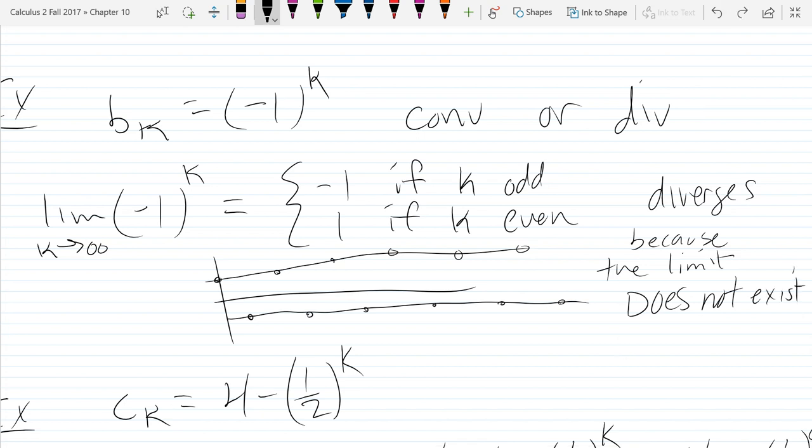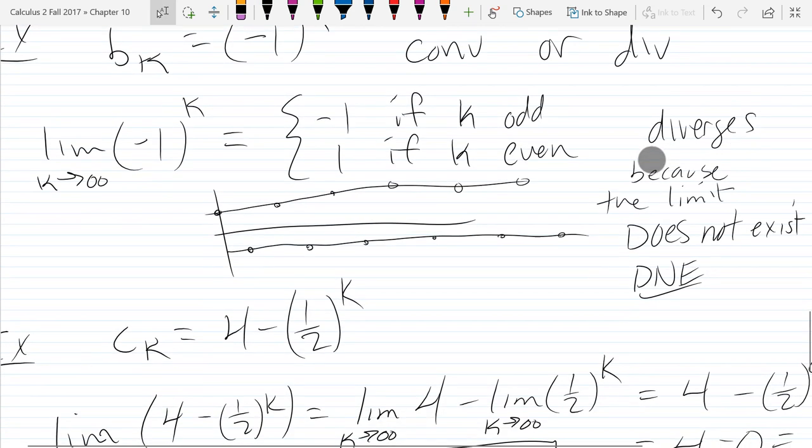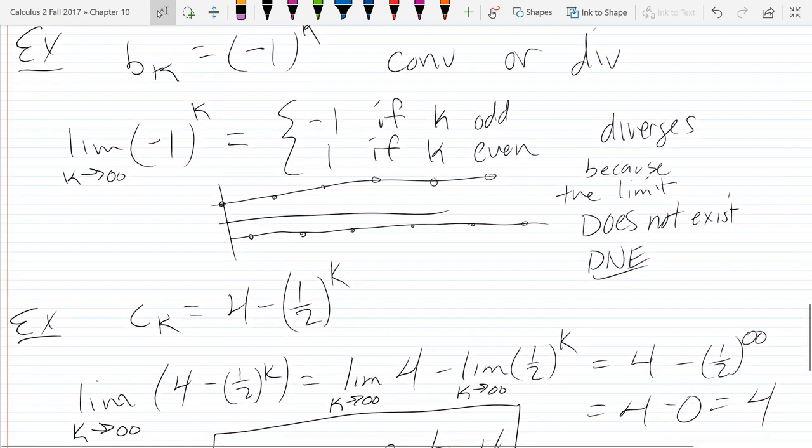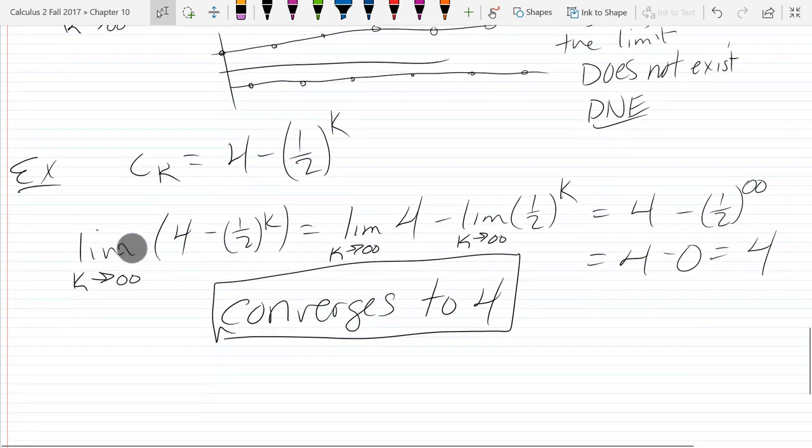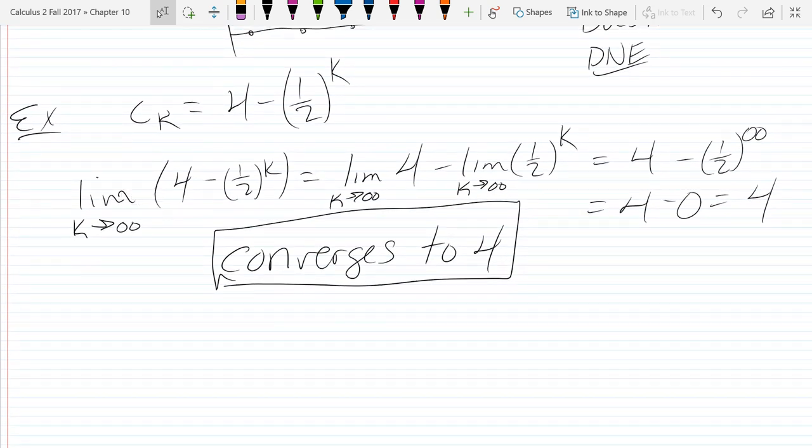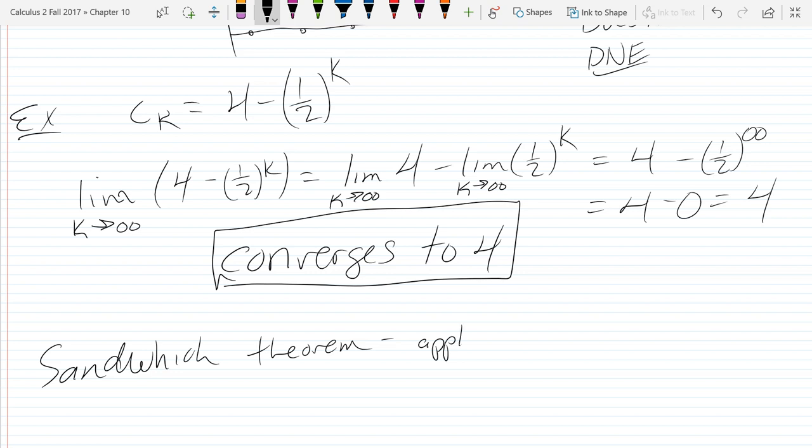Now, web work I think will use the DNE a lot of times. So DNE will be a common answer for limits here. So there's of course you can use the Sandwich Theorem. I don't want to go back over the Sandwich Theorem, but you can look back at the Sandwich Theorem. I'll just write that down, just the name. Sandwich Theorem applies here.